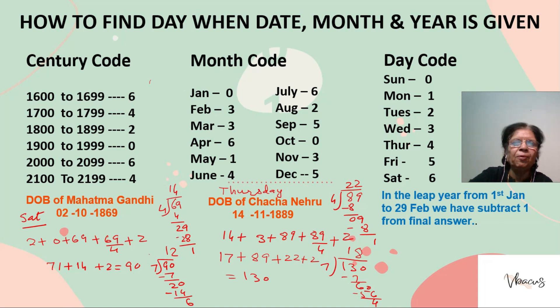Now the day code is very simple. It starts from Sunday with 0 and ends with Saturday as 6.